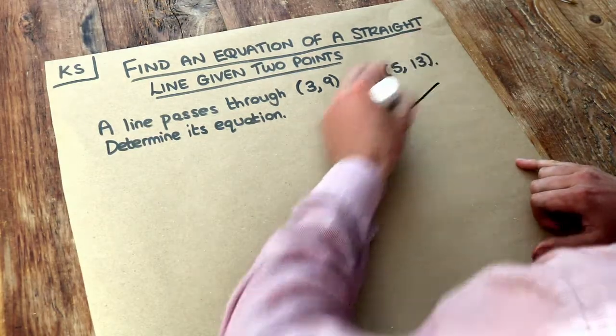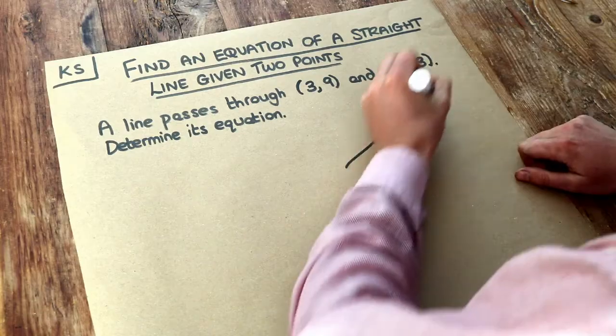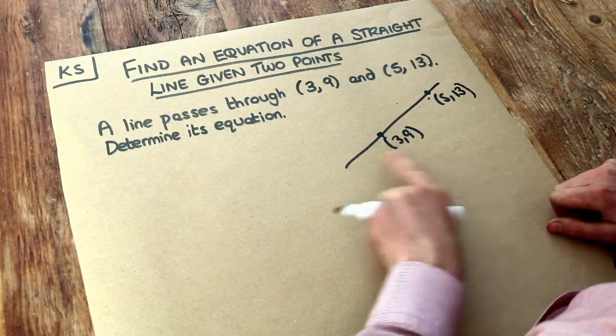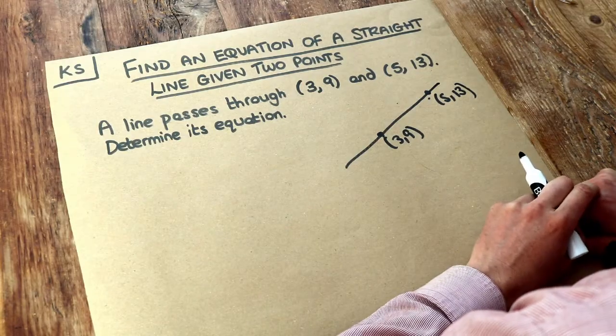So we've got a line, it goes through the points (3,9) and (5,13) and we want to find the equation of a line that goes through those two points.